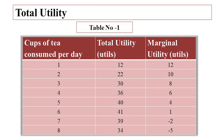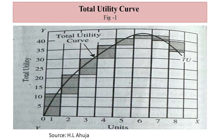But consuming more than 6 cups of tea in a day causes total utility to decline, because consuming more than 6 cups may have adverse effects on health. With 7 cups, total utility declines to 39 utils, and with 8 cups it declines further to 34 utils. The increase and then decrease in total utility is a universal phenomenon, holding for every ordinary economic good. Up to the 6th cup the total utility curve is rising; beyond this it starts falling.